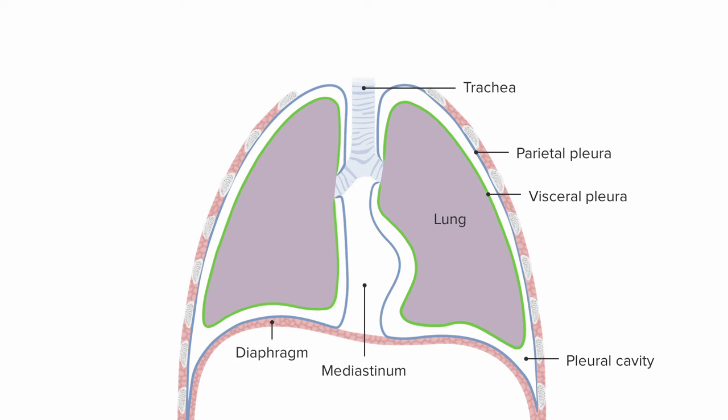There's an area of the lung with a little indentation where structures enter and exit called the hilum. That's a term you might hear with other organs where structures enter and exit — for example, the kidney or the spleen both have a hilum.